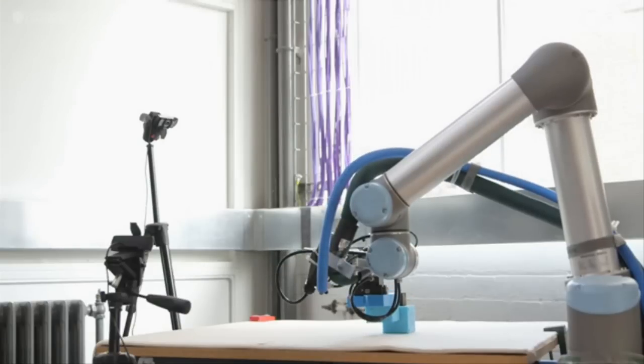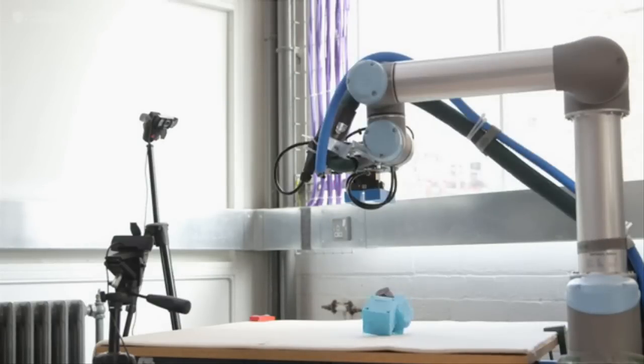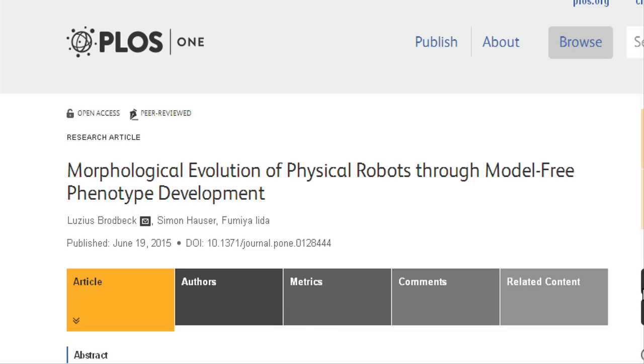Researchers led by the University of Cambridge have built a mother robot that can independently build its own children, and test which one does best, and then use the results to inform the design of the next generation so that preferential traits are passed down from one generation to the next.